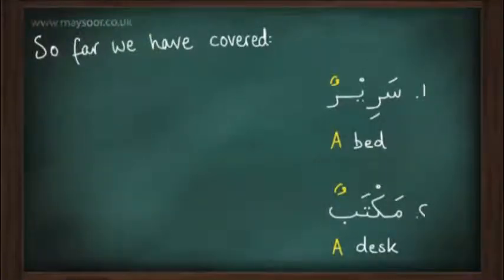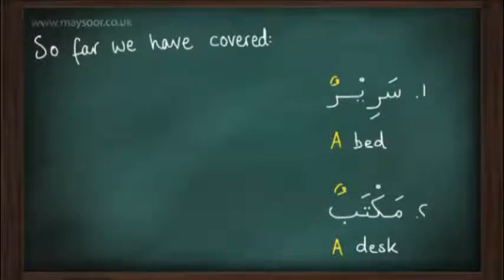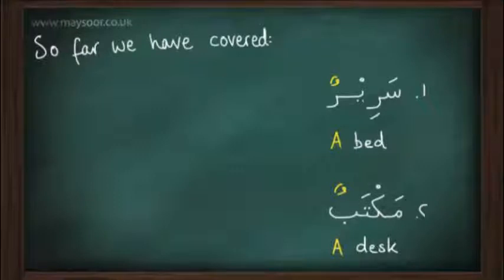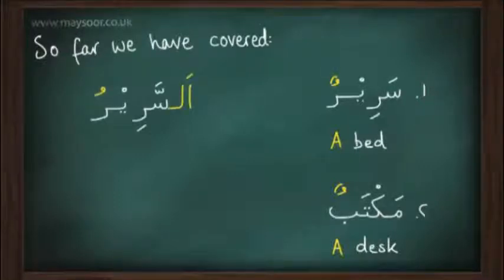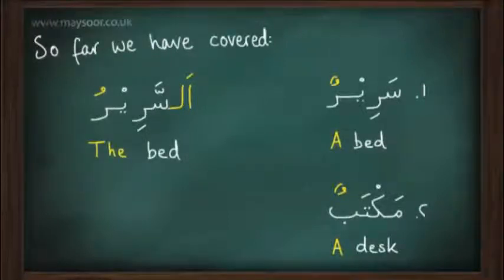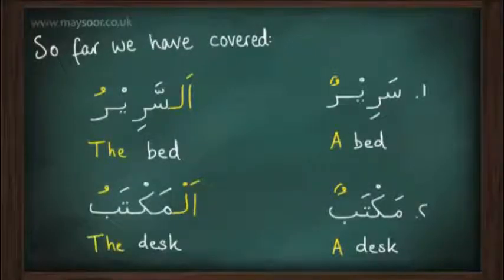We also mentioned that if we wanted to change the ism — the noun — from being nakira, indefinite, to being ma'arifah, definite, we simply add 'al' at the beginning of the noun. So, for example, sarirun becomes as-sariru, meaning 'the bed', and maktabun becomes al-maktabu, meaning 'the desk'.